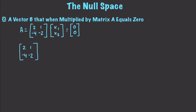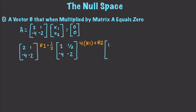I want to put this in row echelon form. First, I'm going to take R1 and multiply it times one half, and whenever I do that we are going to get 1 and one half — nothing changes on the bottom. Then I'm going to take 4 and multiply it times row 1 and add it to row 2. If I do that, I'm going to get 1, one half, and 0, 0.